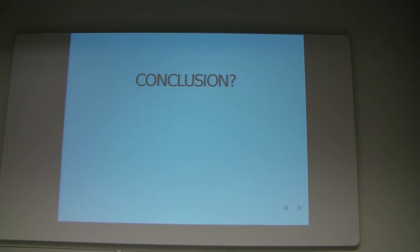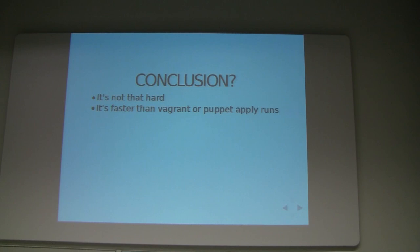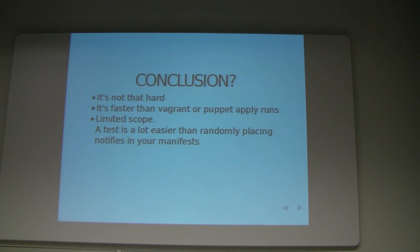So what is our conclusion up till now? It's really not that hard. We don't have any reasons to say 'oh I can't do that.' You can easily copy-paste your variable into testing without extra effort. It's a lot faster than doing a Vagrant up or a puppet apply, especially if you're going to test a function — you don't want to test the complete manifest, you just want to test that one function. We're testing on a limited scope. If you run into a problem, you can narrow down to the exact test that fails.